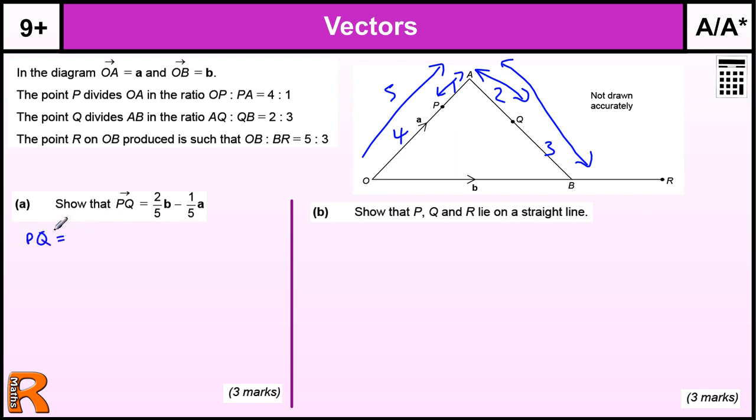So let's just start that. So PQ is going to be equal to PA plus AQ. Now PA as I said is 1 fifth of A. So 1 fifth of A. I'll put a little squiggle there to represent the bold part. And AQ is going to be 2 fifths of AB. Now let's just work out AB separately. AB is going to be minus A plus B.